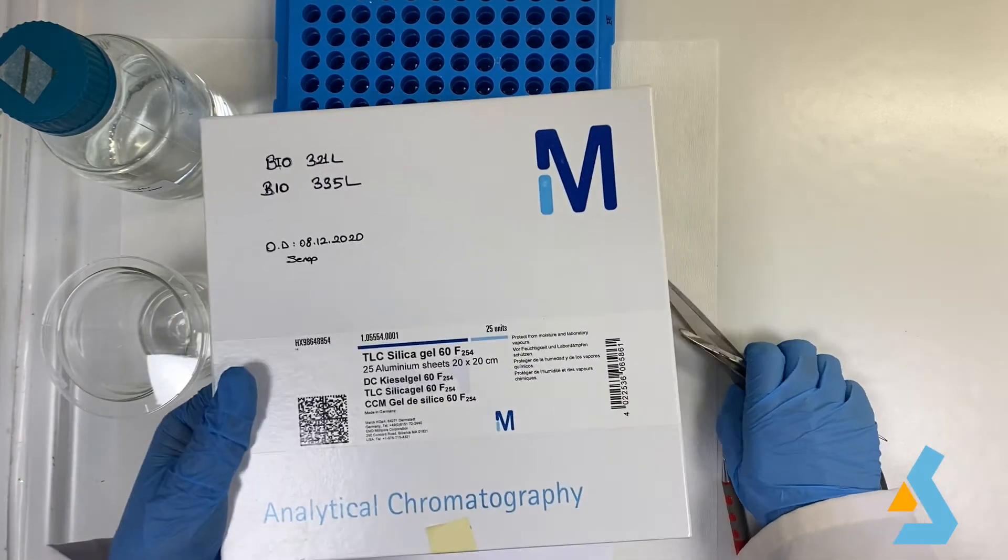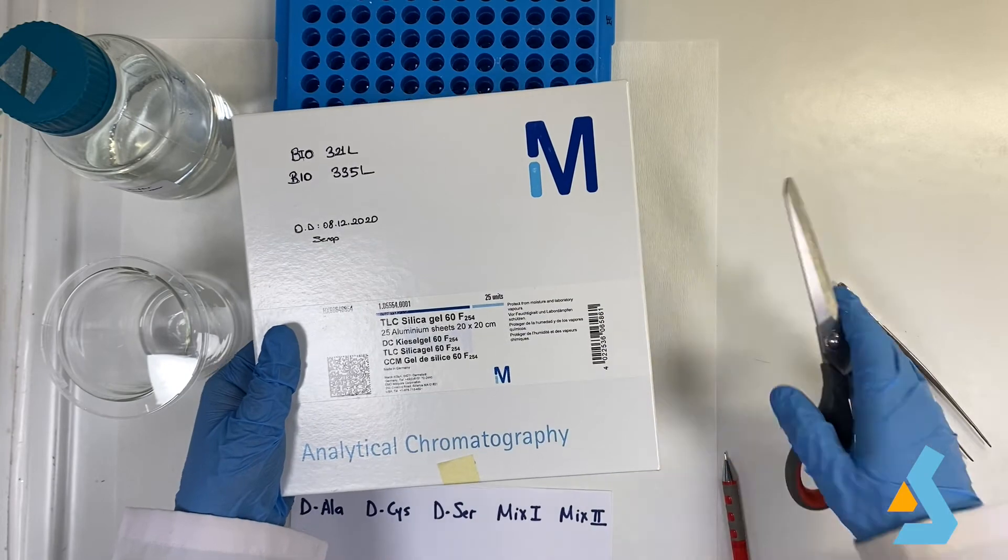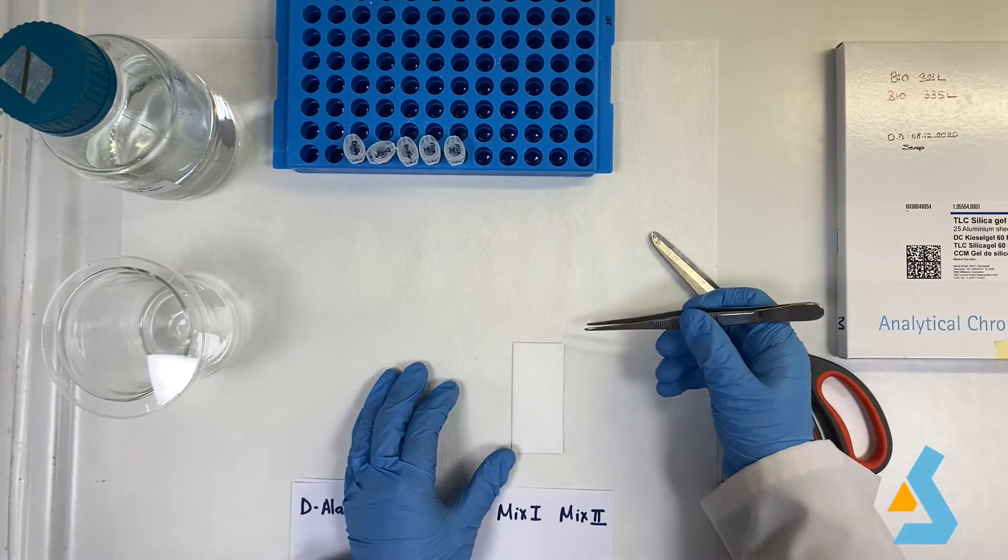In this experiment, we use thin layer chromatography silica gel 60 by Merck. We cut this rectangular shape piece for our experiment.